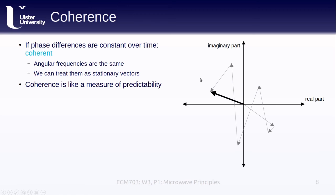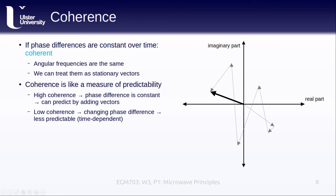Another way to think about coherence is that it's like a measure of predictability. If we have high coherence, that means that the phase difference between the two vectors, or the two images, is constant, and we can predict the result of interference by adding these two vectors together. If, on the other hand, we have low coherence, that means we have a changing phase difference, and it's less predictable because it depends on time.